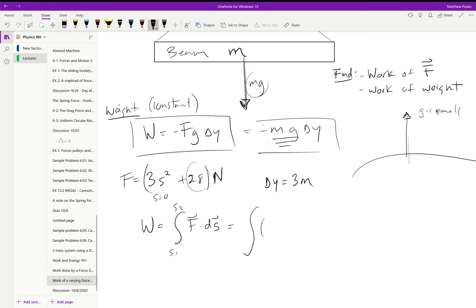So let's go ahead and crank this out. We have 3s squared plus 28. And we can say this is some y is equal to 0 right here, and it's going to lift it to 3. So from some s is equal to 0, or y is equal to 0, either one, to some s is equal to 3 meters.